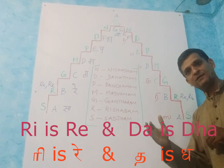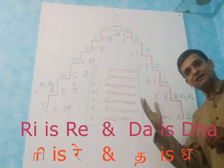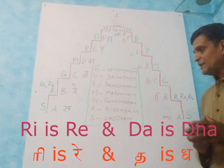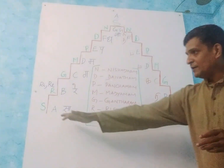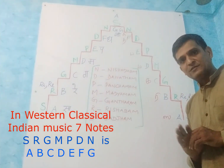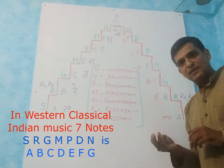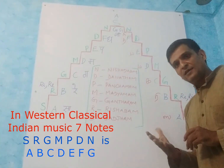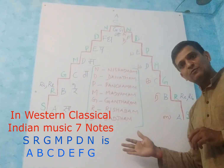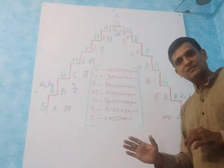The differing syllables are: Ri, Dha — pronunciation variations between Carnatic and Hindustani. In Western classical, the first seven alphabets — A, B, C, D, E, F, G — are given to the seven musical notes.